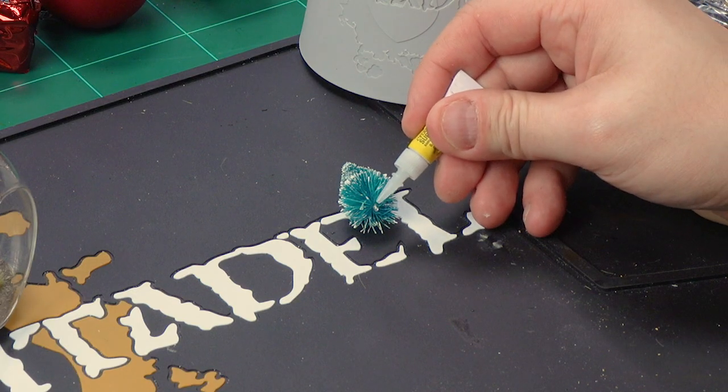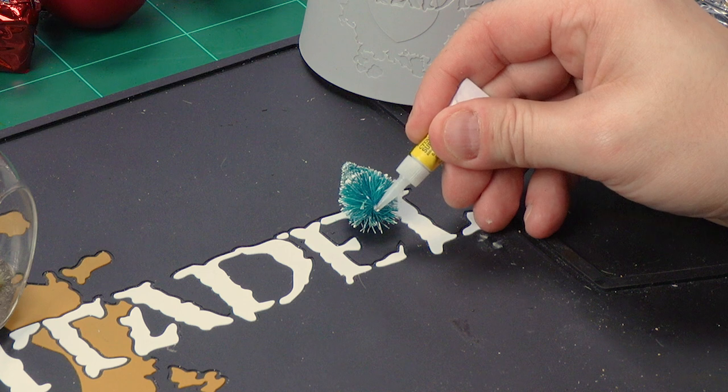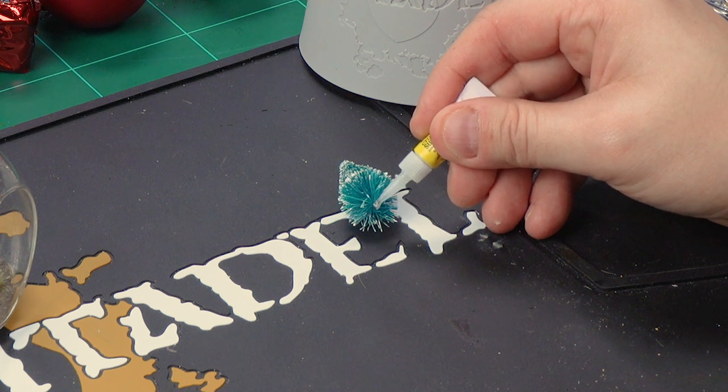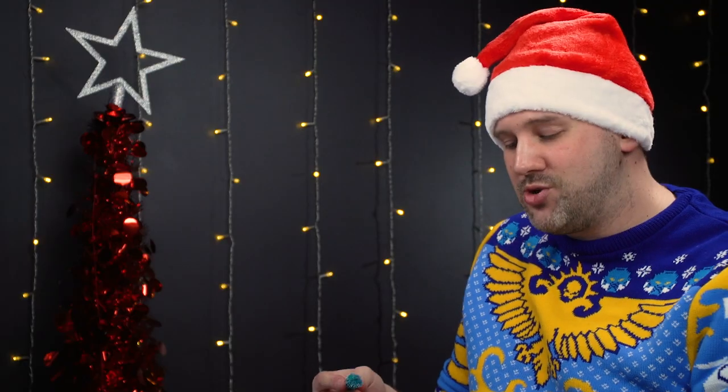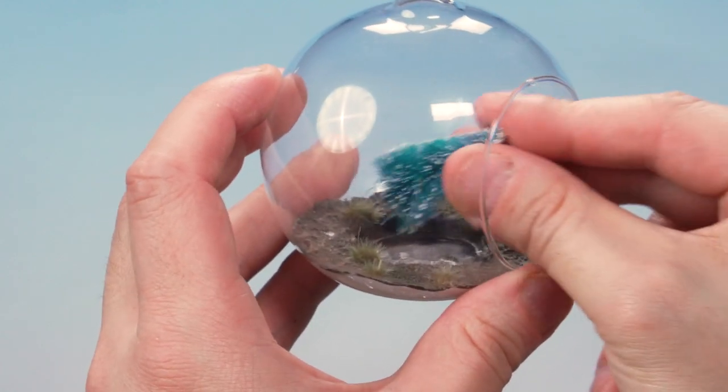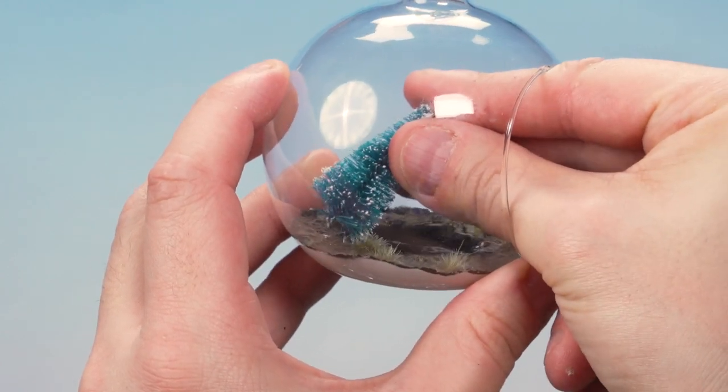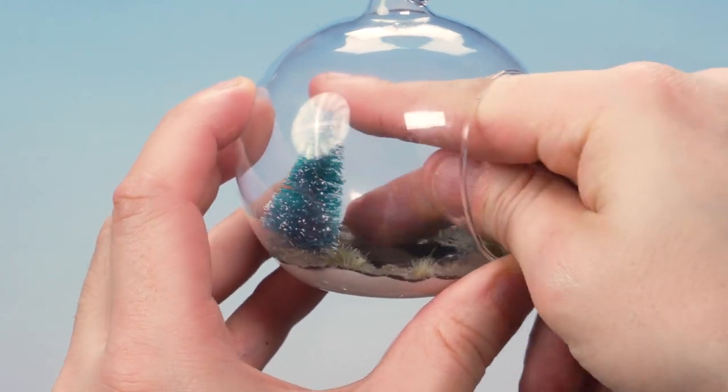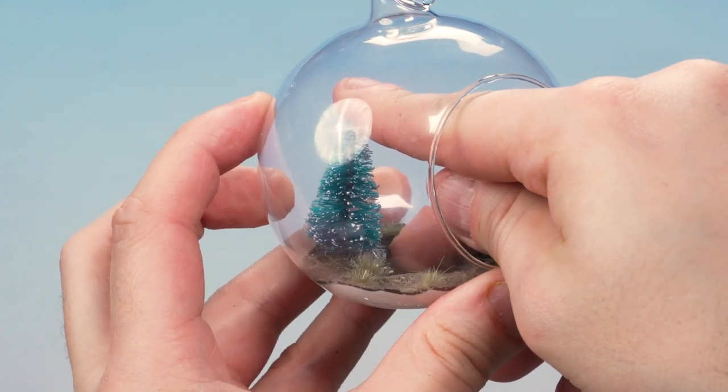Let's grab some super glue here, just apply it to the wire that's coming out the bottom, a nice healthy amount. Perfect. Then we're going to take the small Christmas tree and the bauble and just now apply it into that hole we just made. Just press it in like that. Stand it up and let that super glue dry.